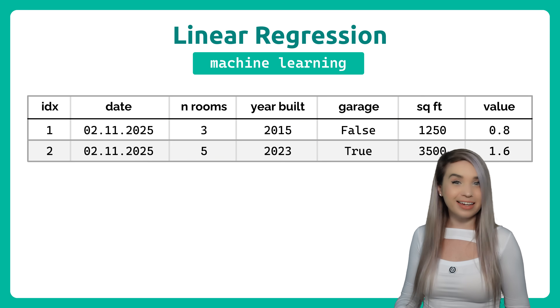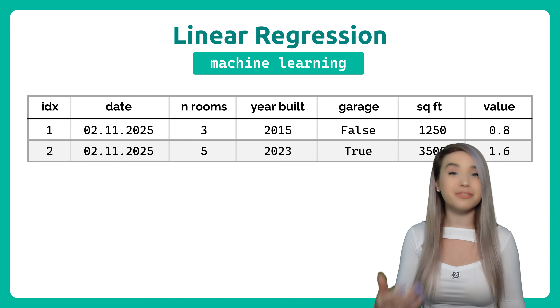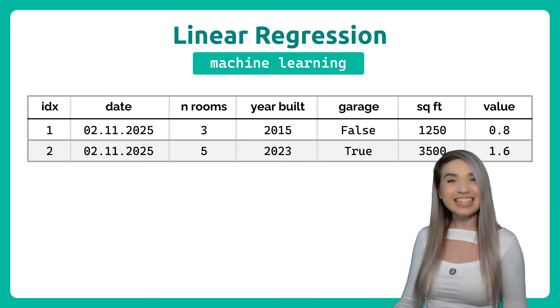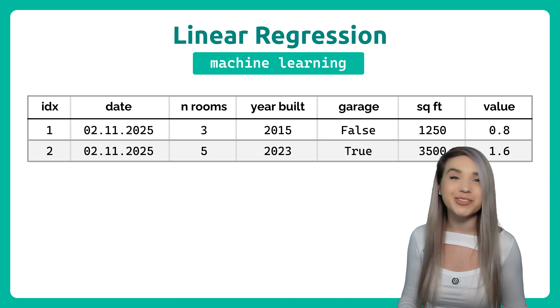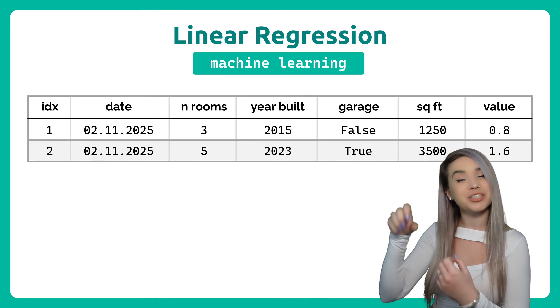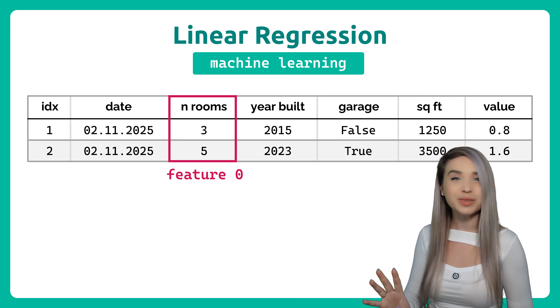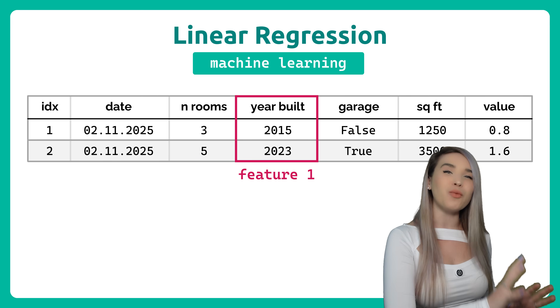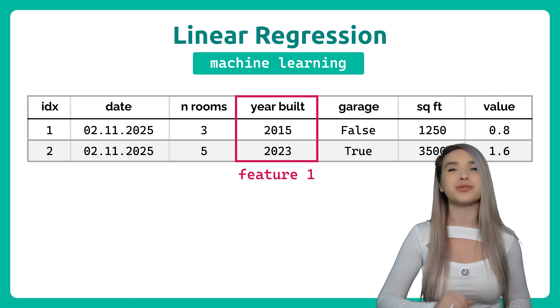Then, to simplify things even further, let's say that we only have two features: feature 0, the number of rooms, and feature 1, the year in which the house was built.